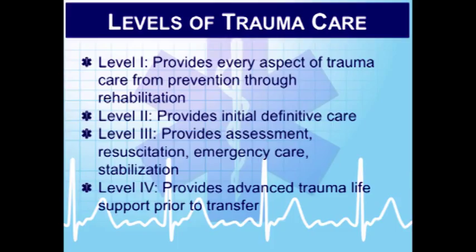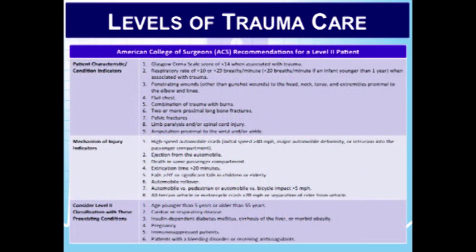Trauma centers are categorized as either adult or pediatric trauma centers — they don't necessarily have to be both, and pediatric trauma centers are less common. There is also a slide showing different levels of care provided at level two trauma centers, including patient characteristics, conditions, mechanisms of injury, and transfer decisions. These criteria are set up by the American College of Surgeons.